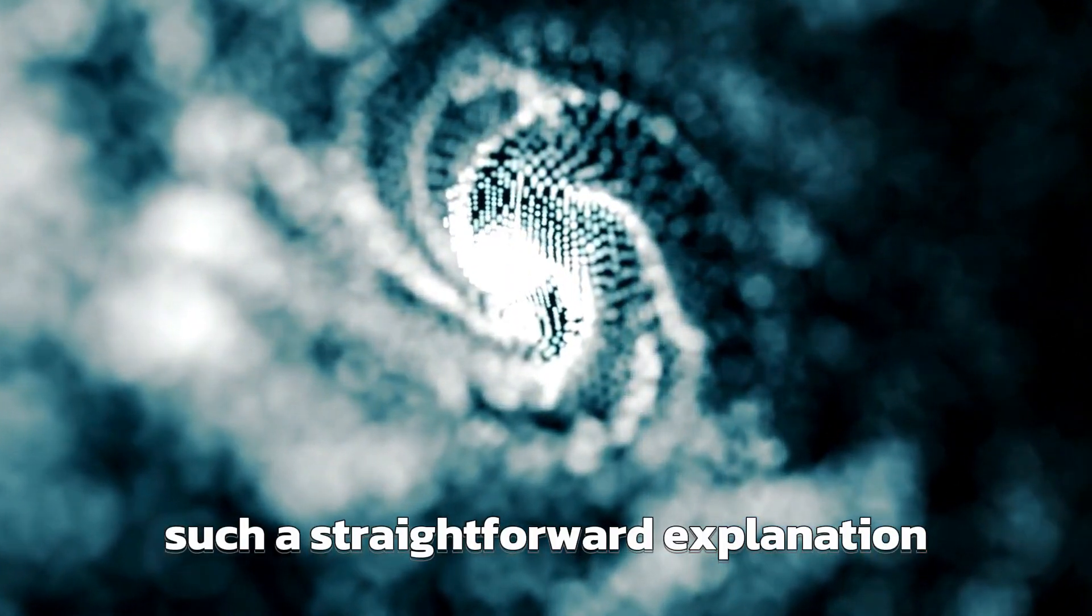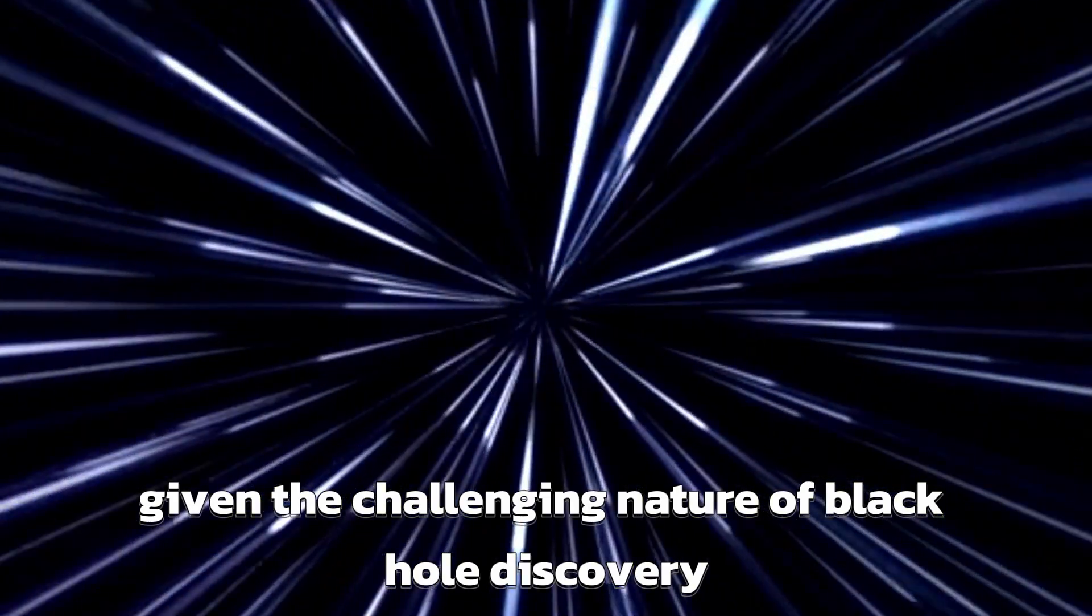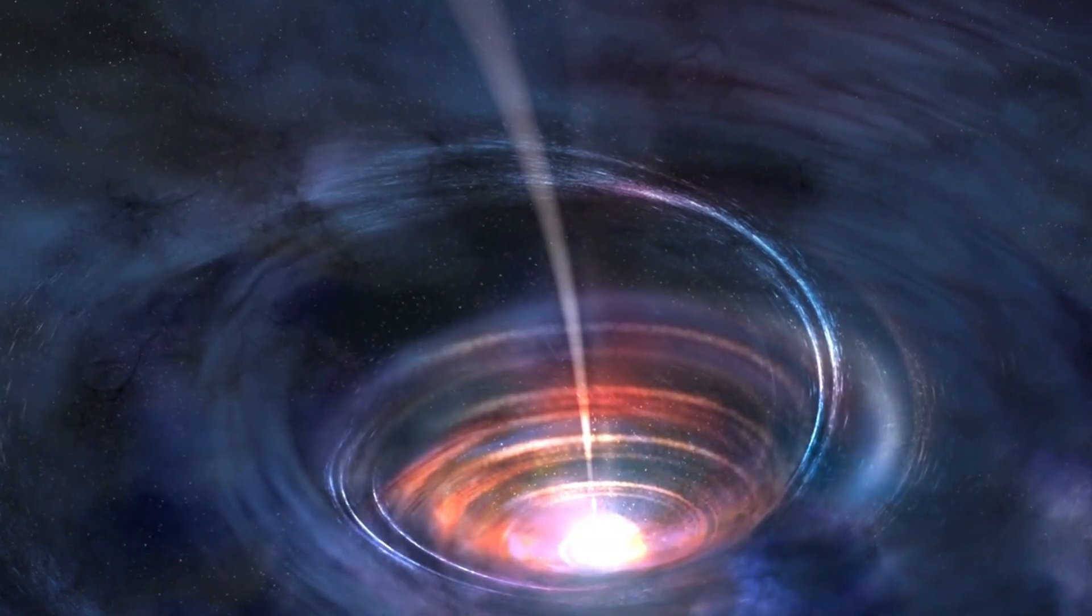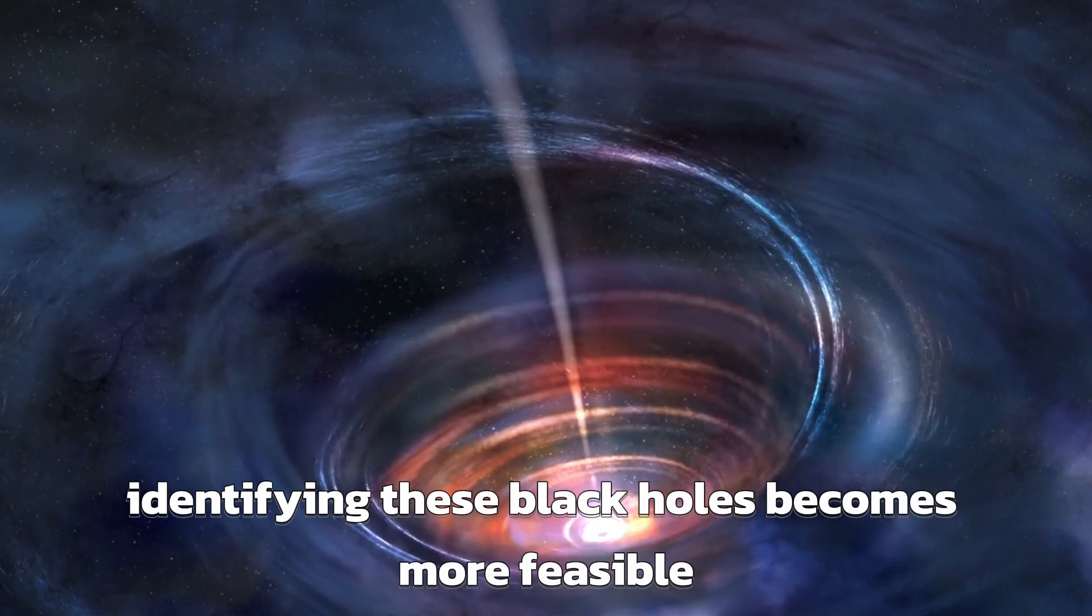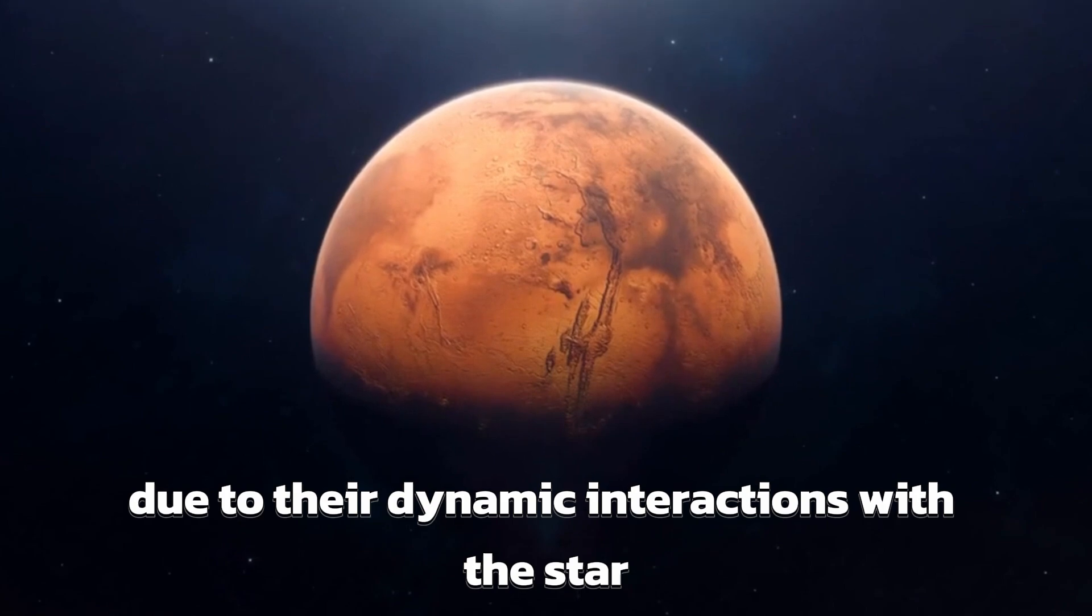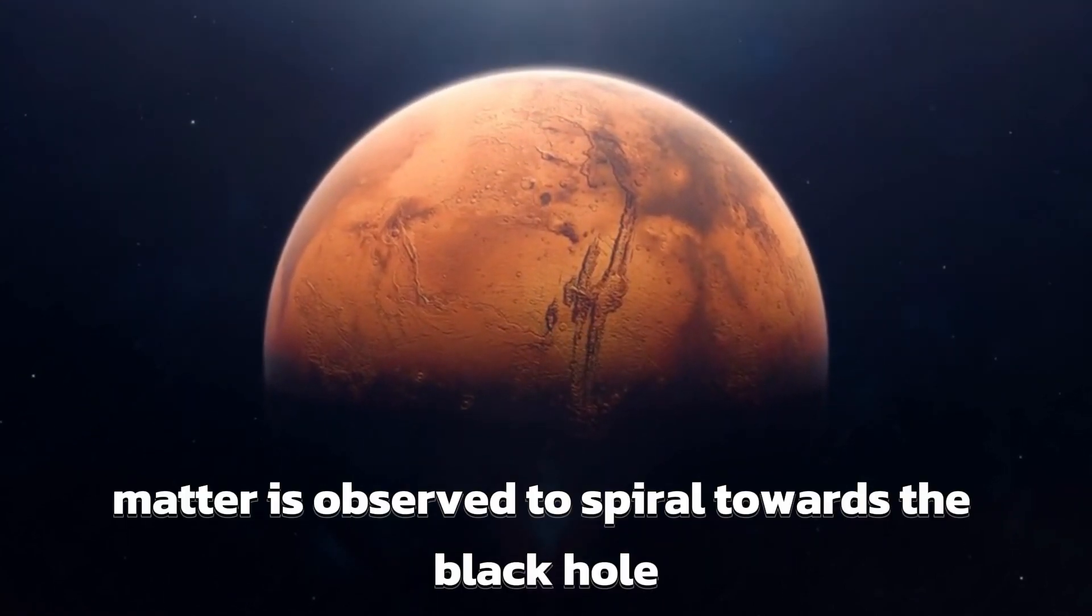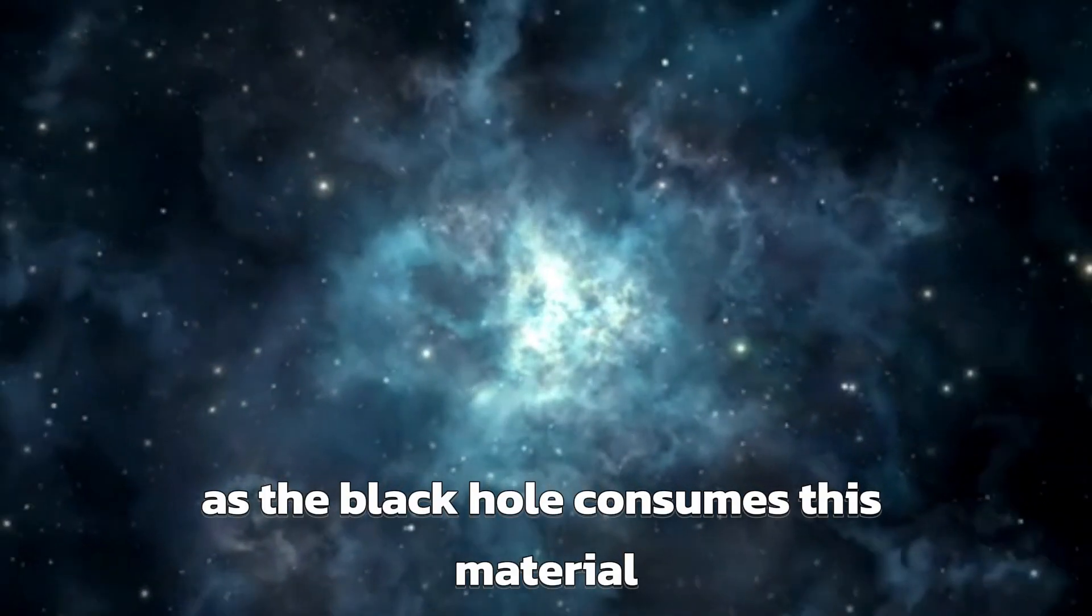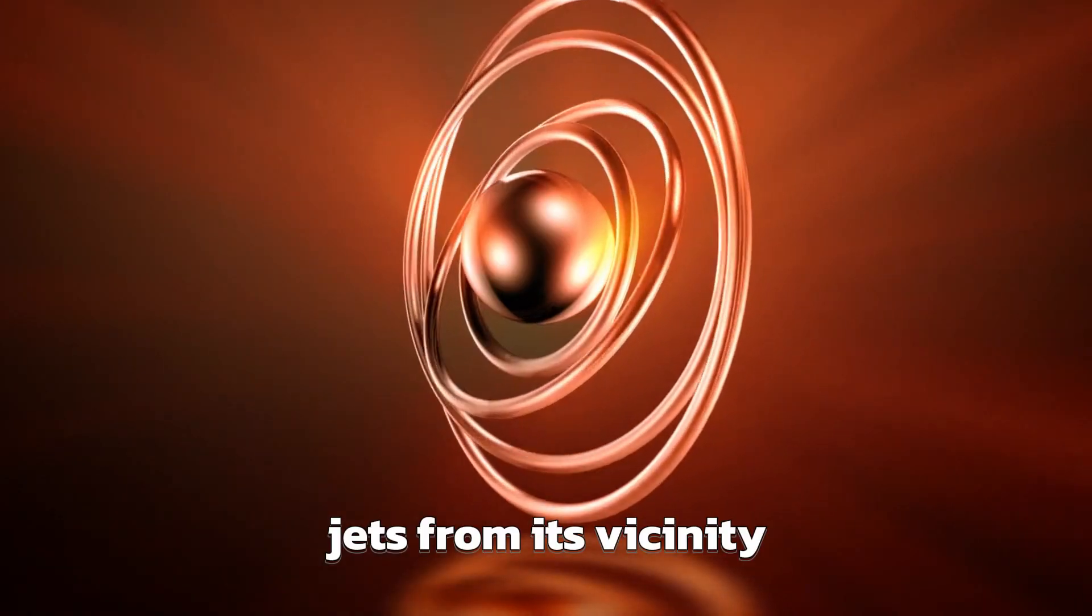Such a straightforward explanation is often the most likely one given the challenging nature of black hole discovery. Exceptionally lightweight black holes like this are very uncommon. When accompanied by a partner star such as Gaia BH1, identifying these black holes becomes more feasible due to their dynamic interactions with the star. During these interactions, the star's matter is observed to spiral towards the black hole. As the black hole consumes this material, it generates X-rays, accompanied by the ejection of material jets from its vicinity.